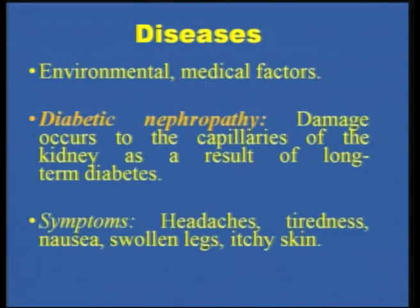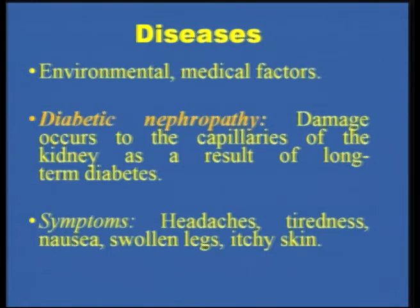Kidney diseases can be due to environmental, genetic, or medical factors. For example, diabetic nephropathy: type 2 diabetes could be due to environmental factors, type 1 is normally due to genetic factors, and type 3 diabetes occurs in very old senile patients. The nephropathy damage occurs to the capillaries of the kidney as a result of long-term diabetes. Symptoms often include headache, tiredness, nausea, swollen legs, and itchy skin.